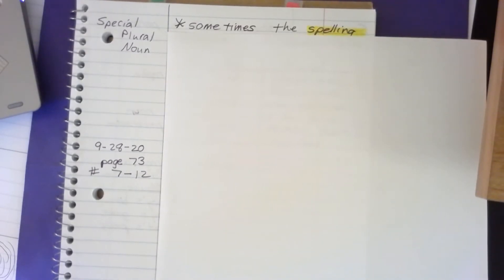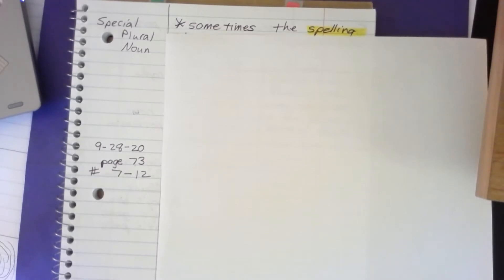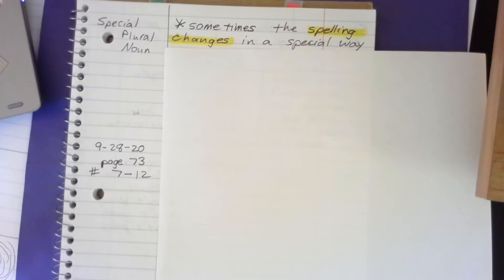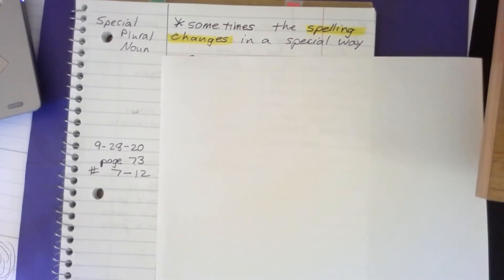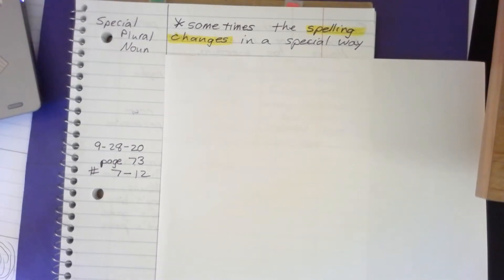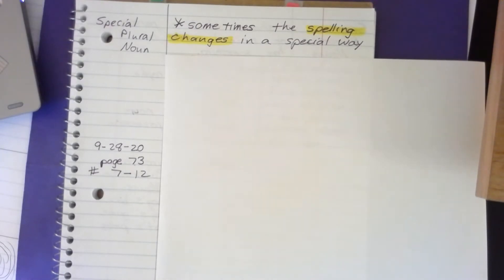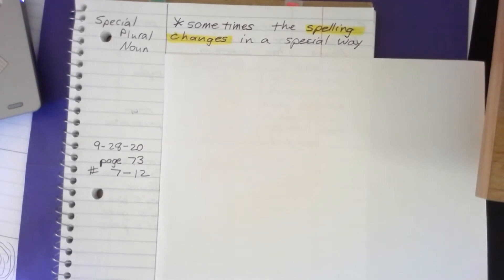Here we go — make sure you write well so you can actually read your handwriting. What are special plural nouns? Sometimes the spelling changes in a special way. Go ahead and write that down, and highlight the word 'spelling changes' because that's key.